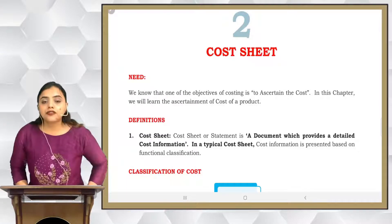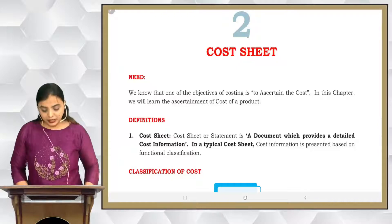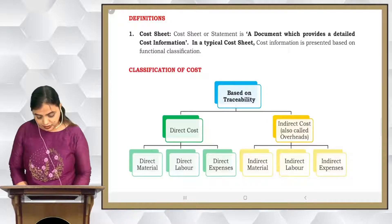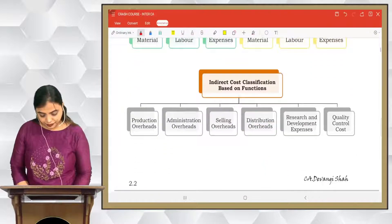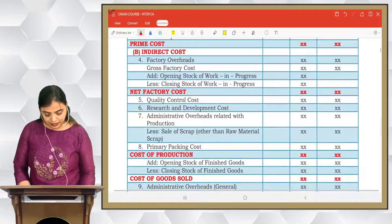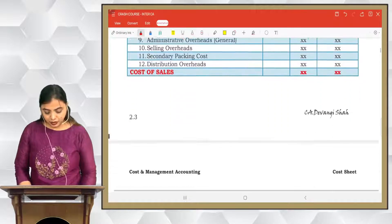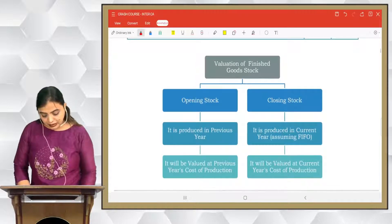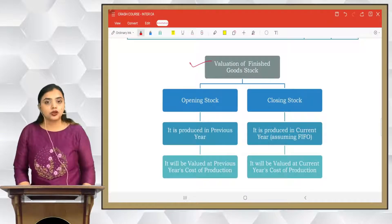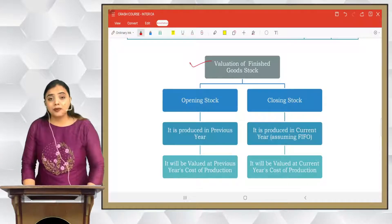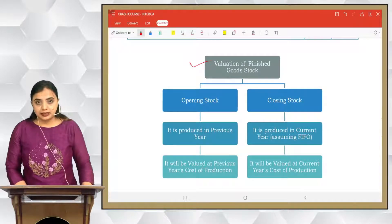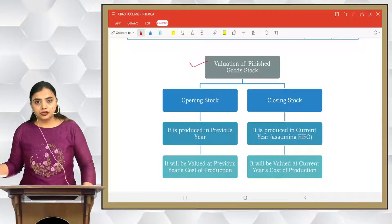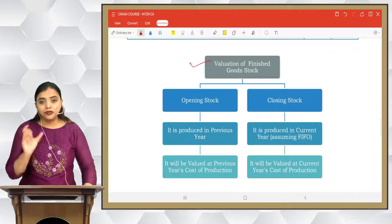The cost sheet format and all its classifications have been discussed. We've seen the whole format — cost of sales, add profit, you get sales. Now let's talk about the valuation of finished goods stock in the format of cost of production: add opening stock of finished goods, less closing stock of finished goods.